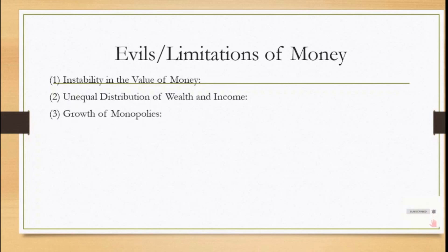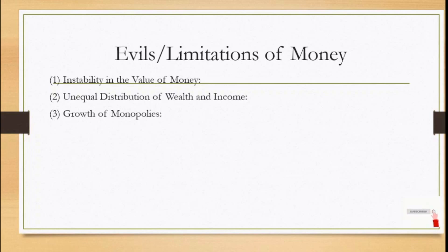Third point: growth of monopolies. Too much growth leads to the concentration of capital in the hands of a few capitalists. This leads to the growth of monopolies which exploit both consumers and workers, bringing disaster to the economy.